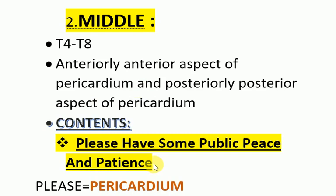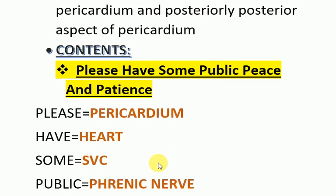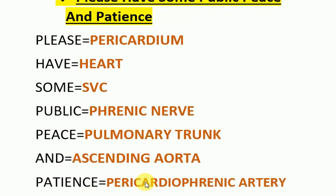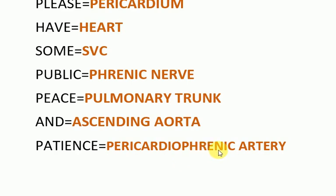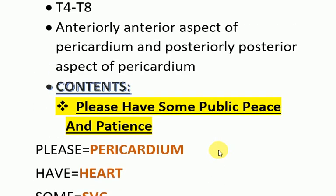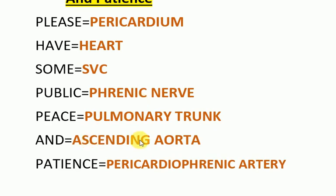The contents of the middle mediastinum can be memorized through the mnemonic: 'Please Have Some Public Peace And Patience.' P for pericardium, H for heart, S for superior vena cava, P for phrenic nerve, P for pulmonary vessels, A for ascending aorta, and P for pericardiacophrenic artery. These are the contents of the middle mediastinum.